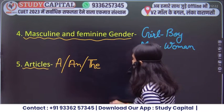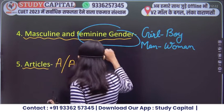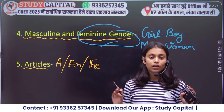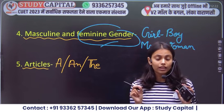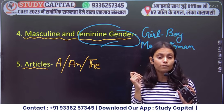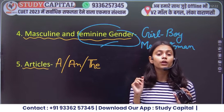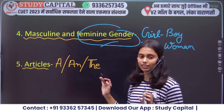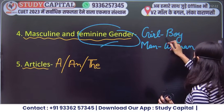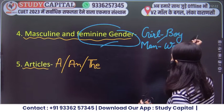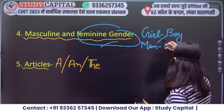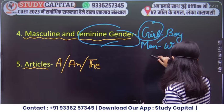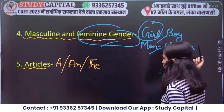Next we have masculine and feminine gender. This will also be covered from the textbook. These are the proper examples that can come in PYQs — if you practice properly, you will get them right. Like girl is feminine, boy is masculine. Man's and woman's are also assigned accordingly.